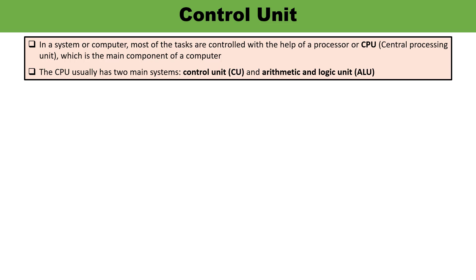Control unit — you have heard the name before, but let me tell you once again. Whenever we are talking about any system or computer, the majority of tasks are controlled with the help of the central processing unit, CPU, and CPU has two main components: one is the control unit and the other is the ALU. ALU is responsible for all arithmetical and logical operations, while the control unit is mainly used to synchronize tasks by sending timing and control signals.